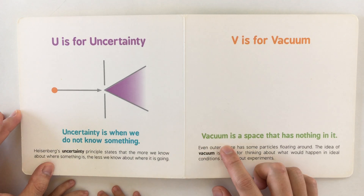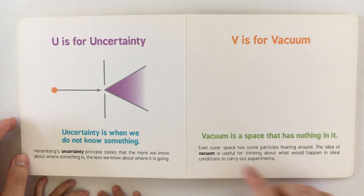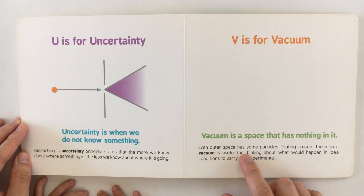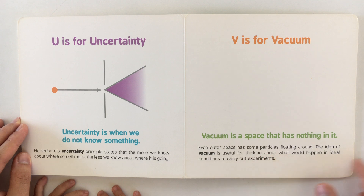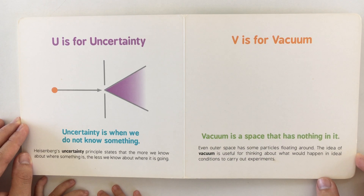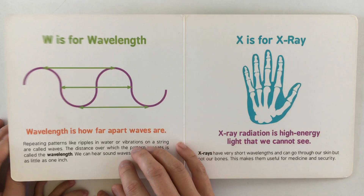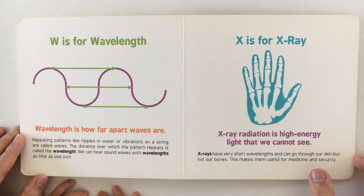V is for vacuum. Look — there's nothing, no picture! Because a vacuum is a space that has nothing in it. Even outer space has some particles floating around. The idea of a vacuum is useful for thinking about what would happen under ideal conditions to carry out experiments.